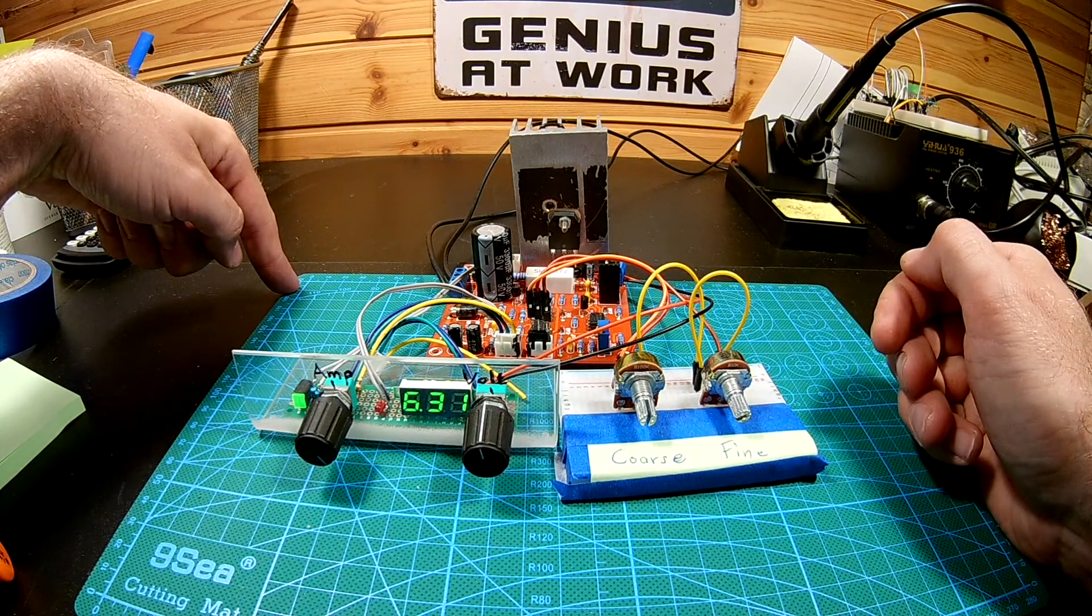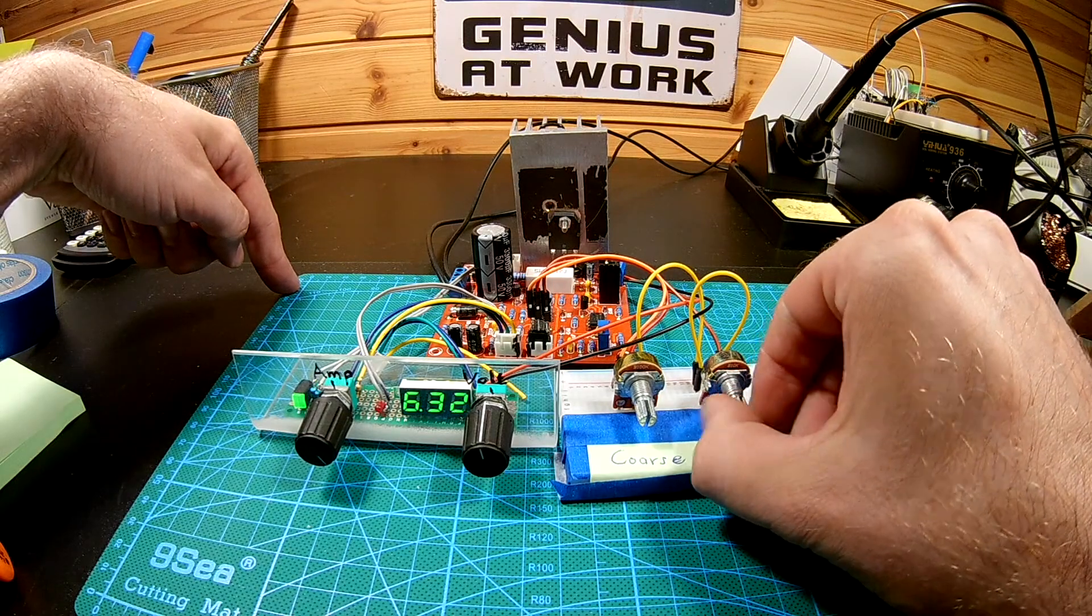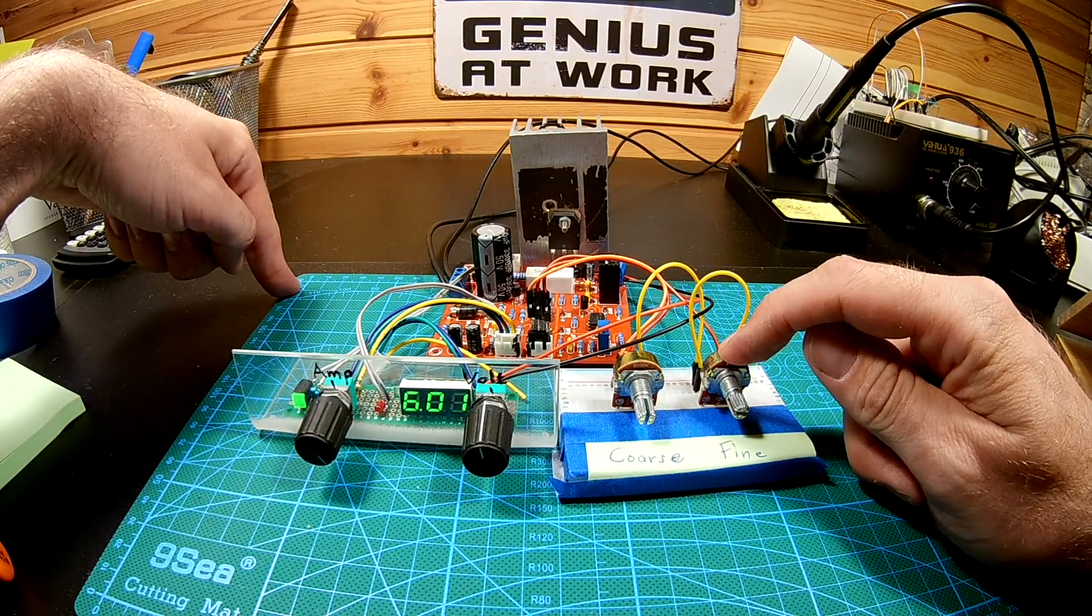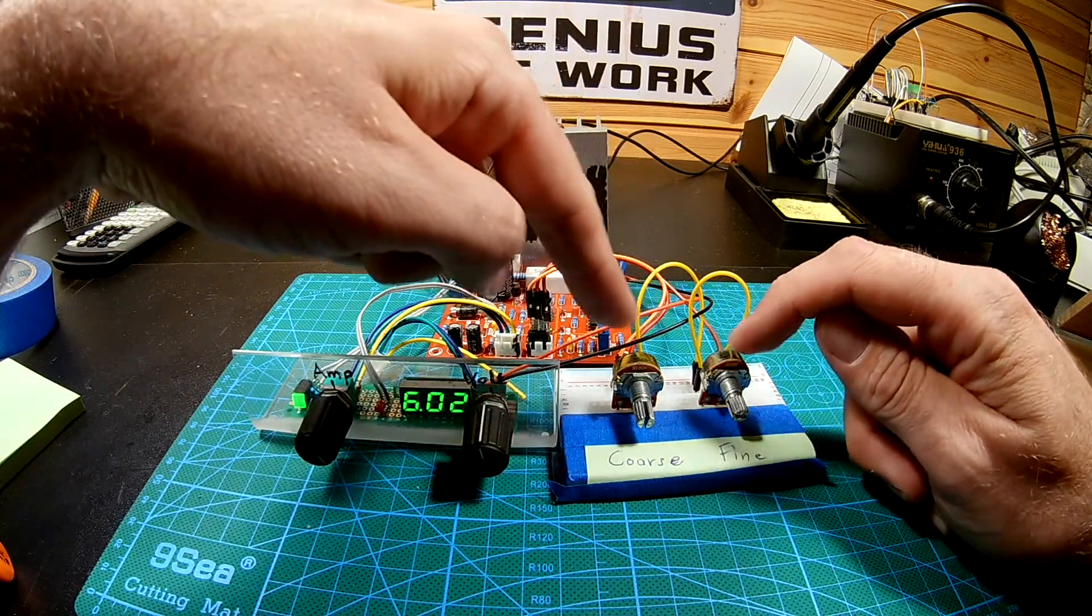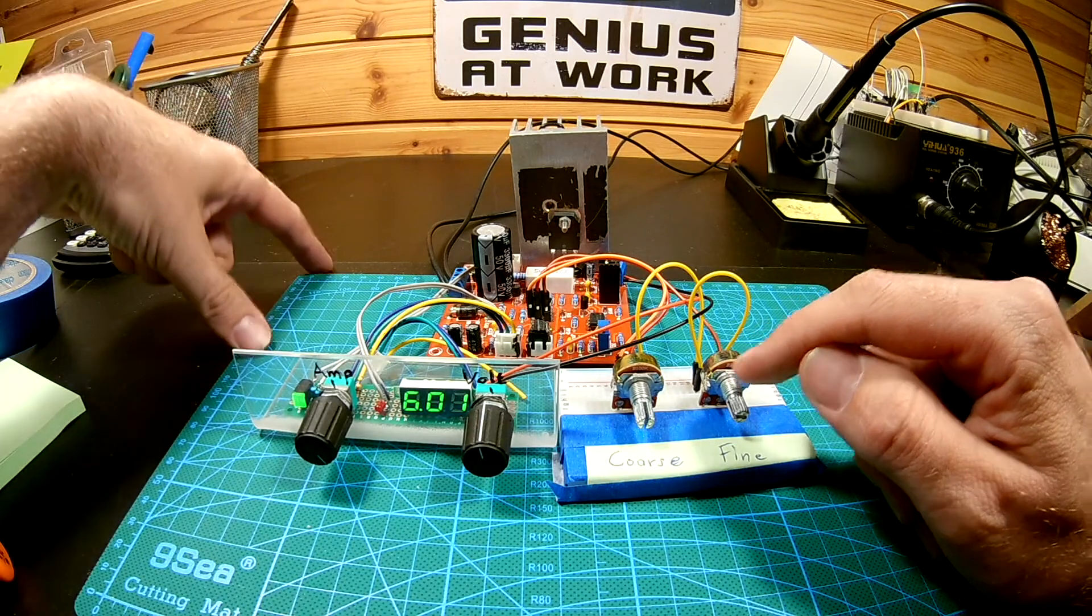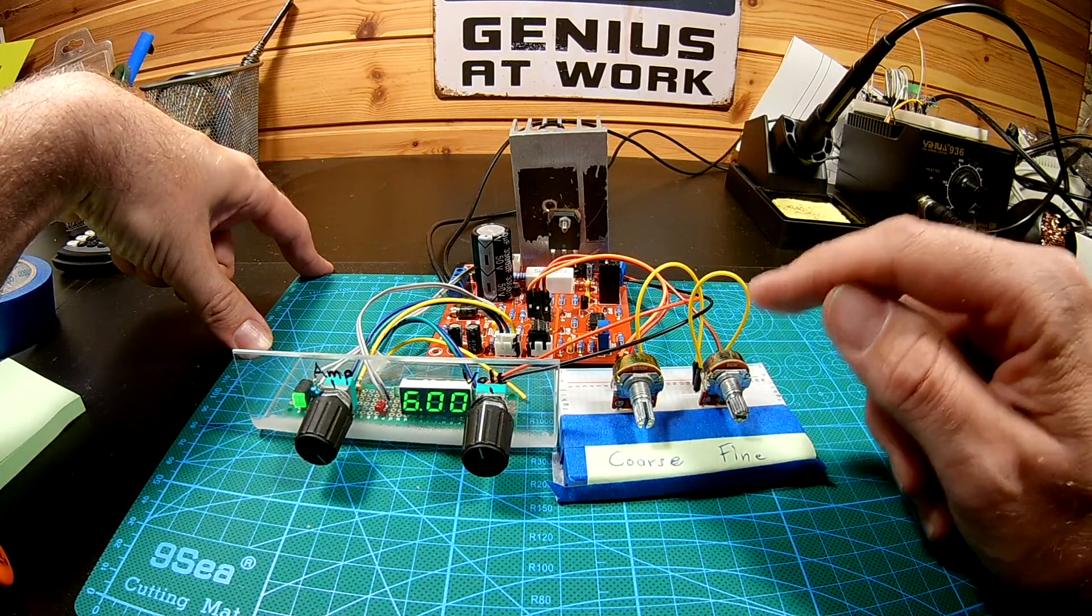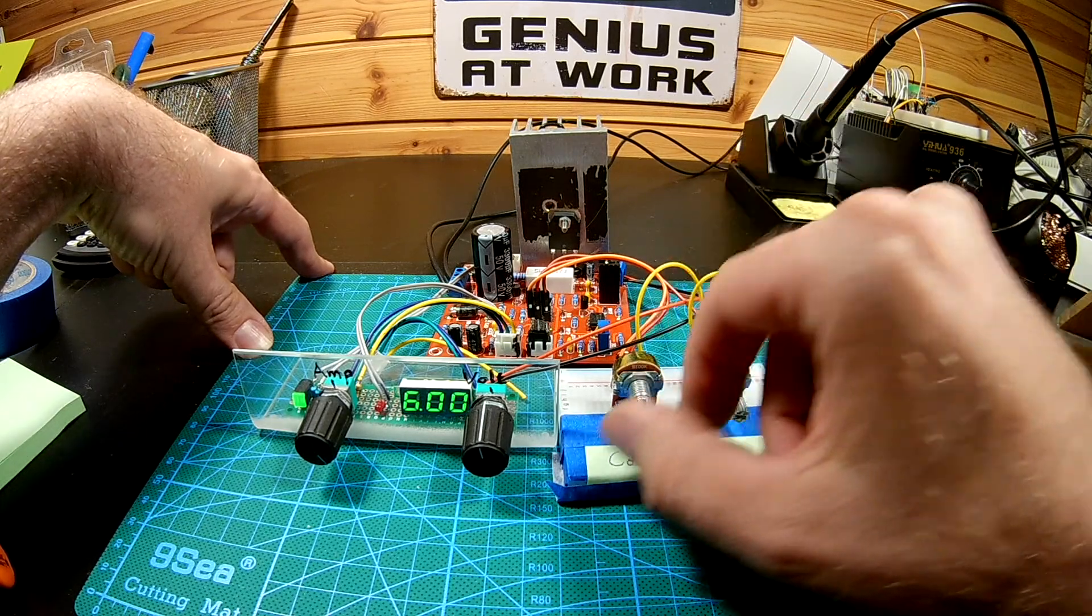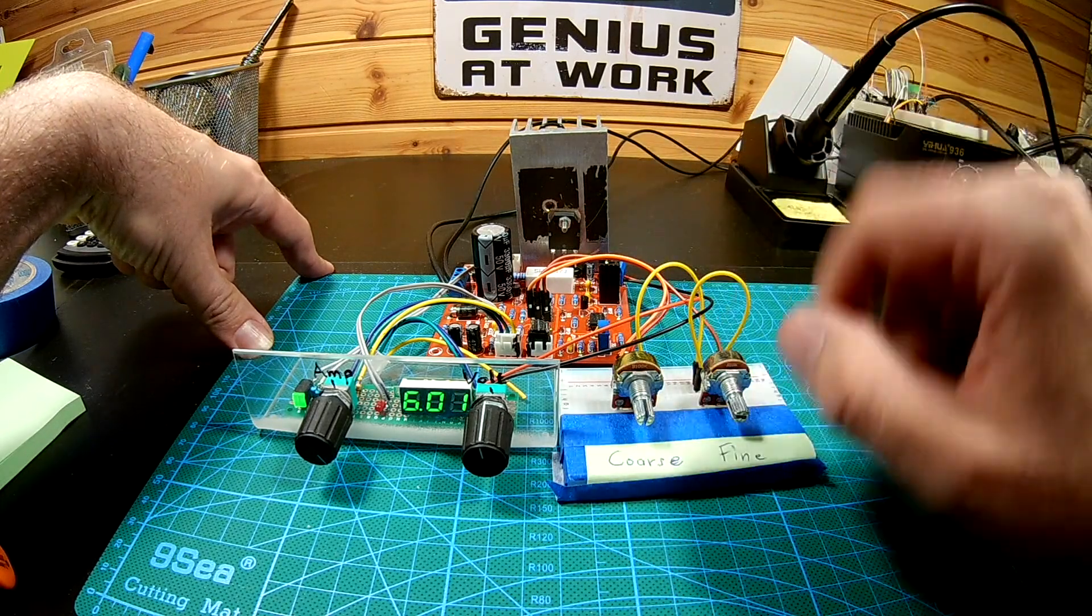So the problem with the setup I have is that the fine adjustments, as these particular measurements are set up, this is one tenth of it. This means the fine adjustment is always one tenth of the setting of the course setting. So the higher up you are on voltage, the more voltage you are adjusting on the fine.